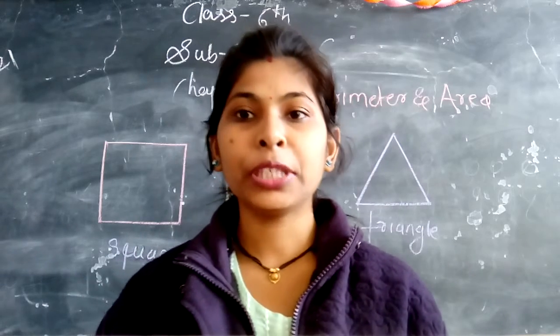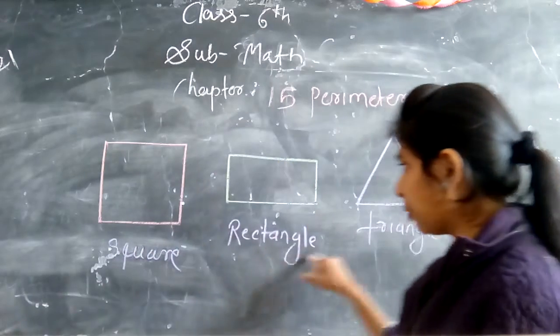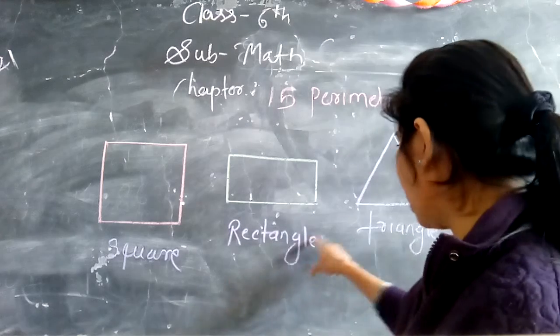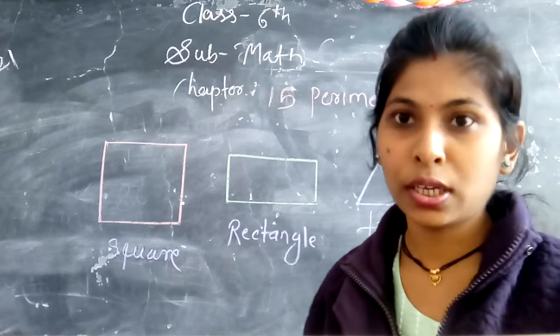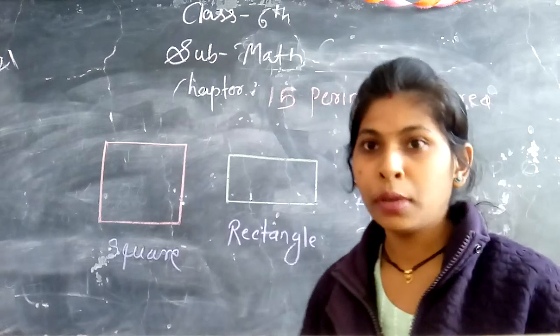Perimeter means what? We have 3 diagrams - square, rectangle, and triangle. So what is perimeter? Perimeter means?